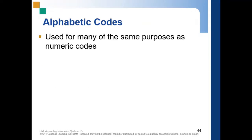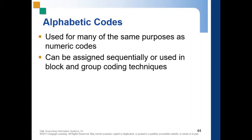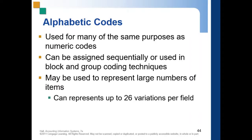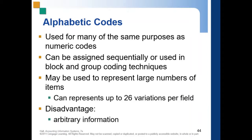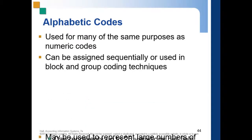Next we have the alphabetic code. It is used for many of the same purposes as numeric codes and can be assigned sequentially or used in block and group coding techniques. It may be used to represent large numbers of items and can represent up to 26 variations per field. The disadvantage is arbitrary information. For example, instead of a numeric store code, you can use store A, store B, store C, store D, and so on.